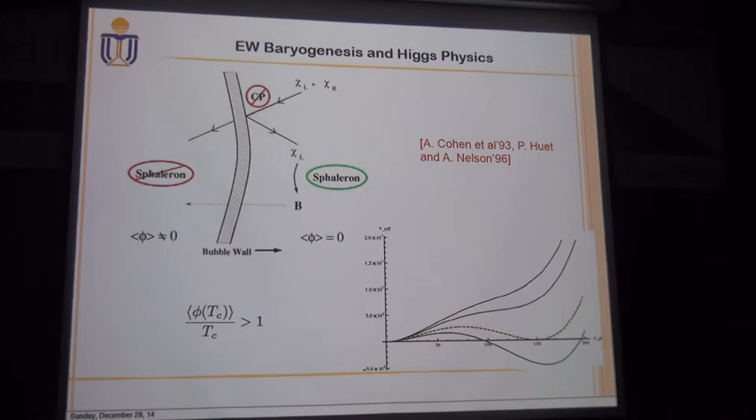Actually, this is not easy to achieve in the standard model. So in the past decades, various mechanisms were proposed to get a strongly first-order phase transition in the early universe. Next, I will show several examples.